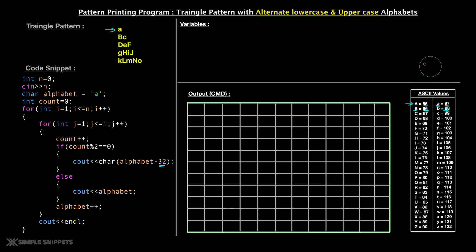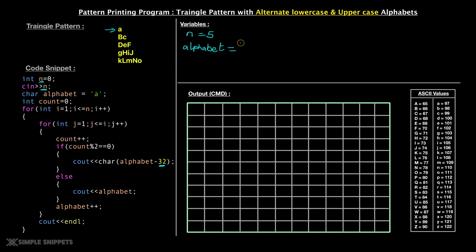Keep that in mind — this is the logic we're going to use when we alternate between uppercase and lowercase. Now let's track the variables. First, you create an int n variable, which is the number of rows you want to print, taken from the user. We initialize n as zero, then take the value via cin. Let's say n equals five. The next variable initialized is alphabet equals lowercase a, since that is the starting point. Then we say int count equals zero, another variable initialized before the looping statements.